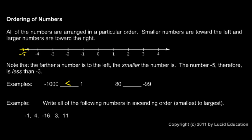Even though the number one thousand is much bigger than one, negative one thousand is much smaller than one. Here the number eighty and the number negative ninety-nine. Eighty is greater than negative ninety-nine, because eighty is to the right of negative ninety-nine.